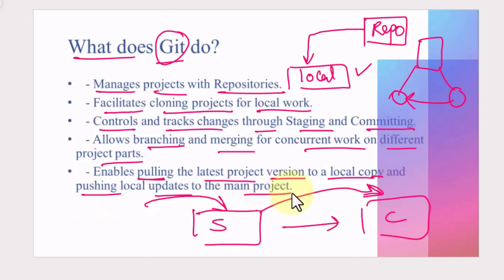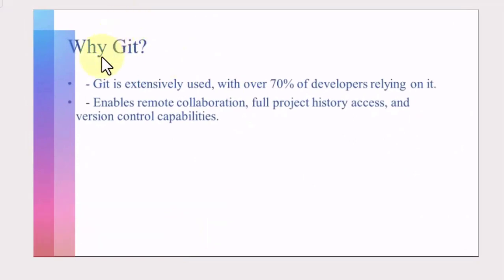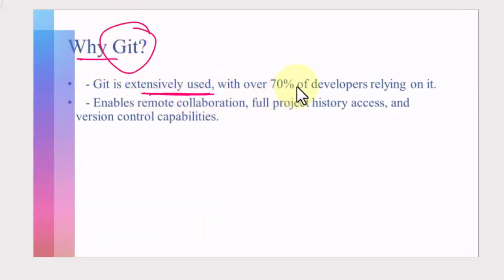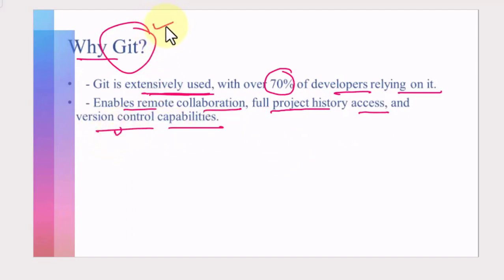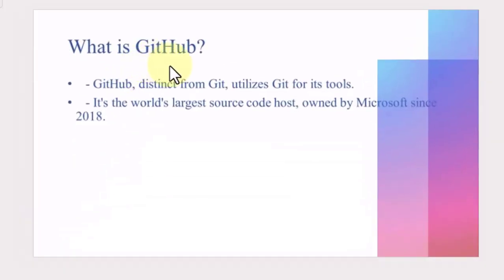Git enables pulling the latest code version to a local copy, and we can also push local updates to the main project using the pull and push commands. Git is exclusively used by over 70% of developers. It enables remote collaboration, provides full project history, and allows version control — all of these advantages make git a very good choice.